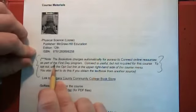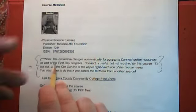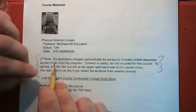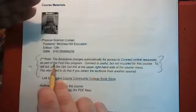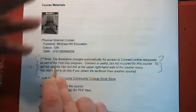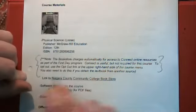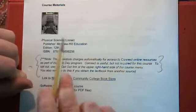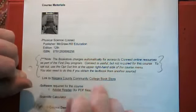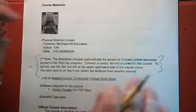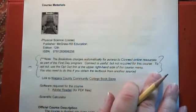The thing is, the bookstore charges you automatically for both Connect and the book, so if you don't want Connect, you have to opt out of it on the bookstore's website or on the class website, and the instructions are here in the syllabus. Also, you have to opt out if you don't want to buy the text from the bookstore, and the thing is that as this course is set up.